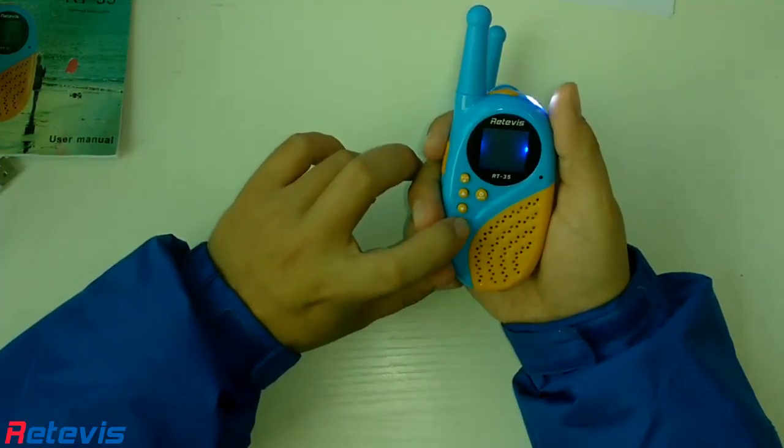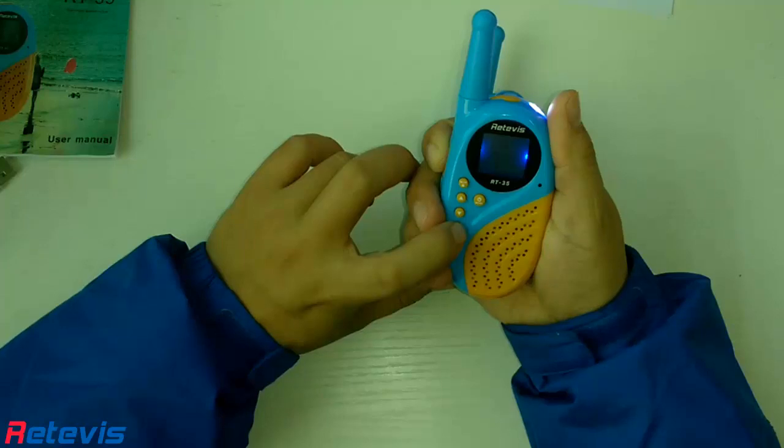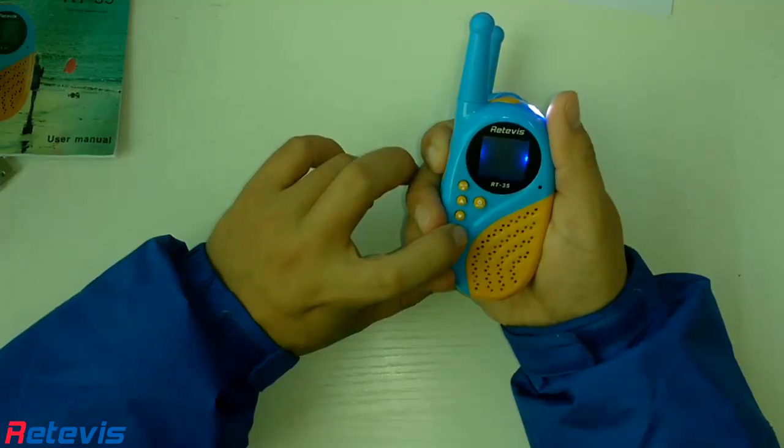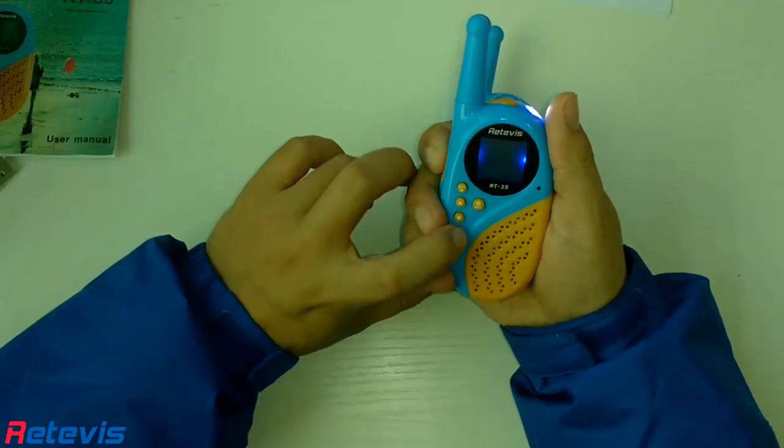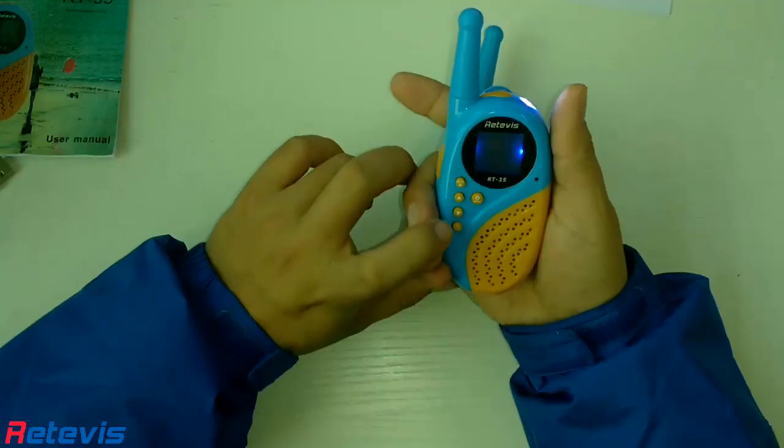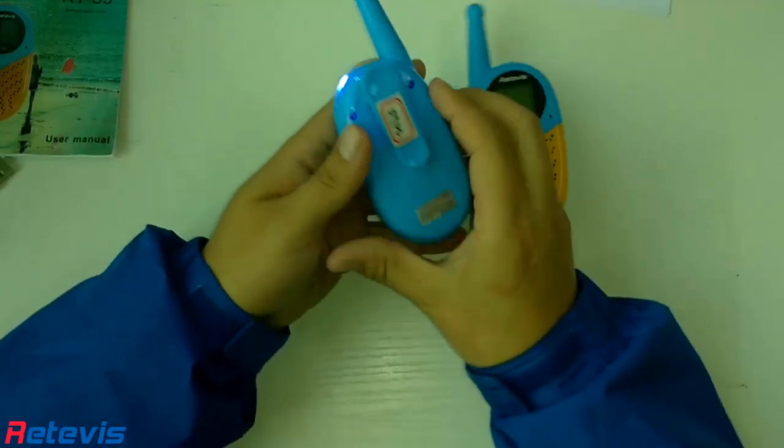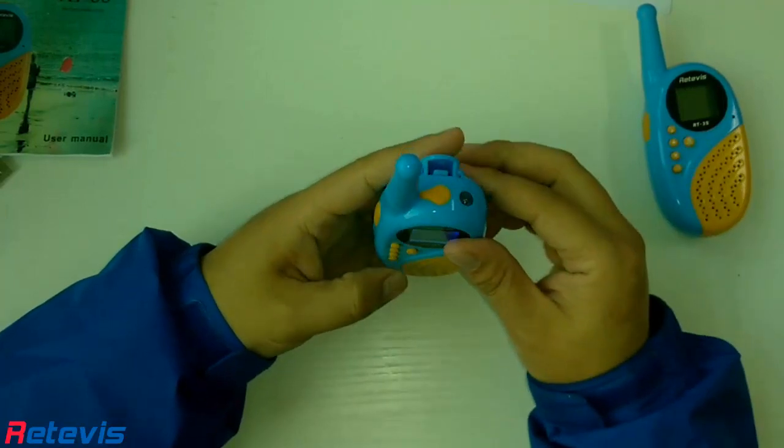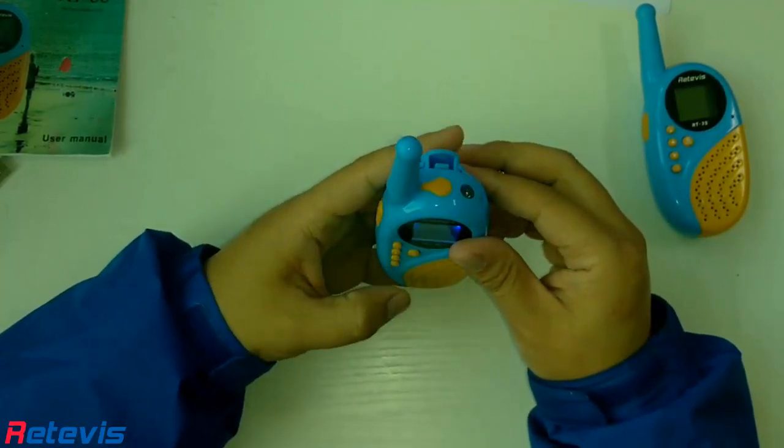In addition, RT35 also has an alarm function. When you set the alarm function, the alarm icon will show on the display. It also supports 2.5mm single-pin headphones that make you hear clearly in a noisy environment.